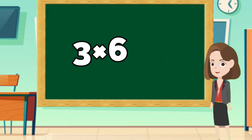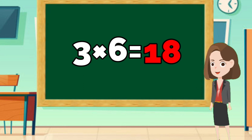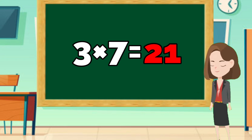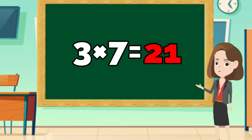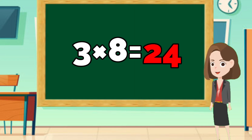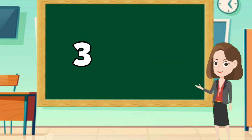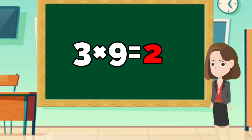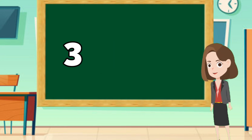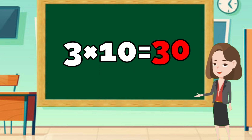3 times 6 is 18. 3 times 7 is 21. 3 times 8 is 24. 3 times 9 is 27. 3 times 10 is 30.